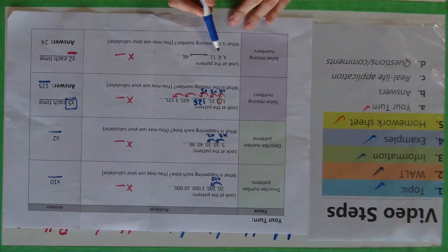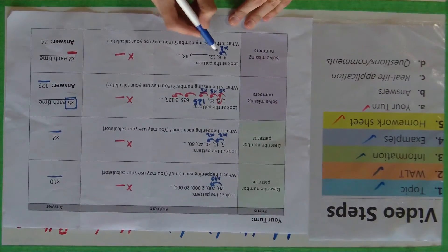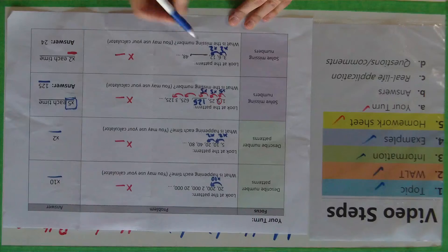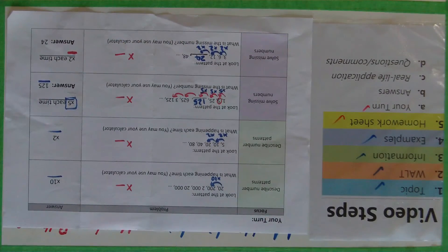And then here, look at the pattern, what's missing. For this one here, I just need to work out, well 3 times 2 is 6, 6 times 2 is 12, 12 times 2 is 24. And they are your answers.